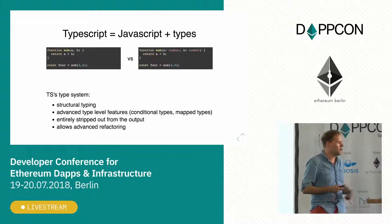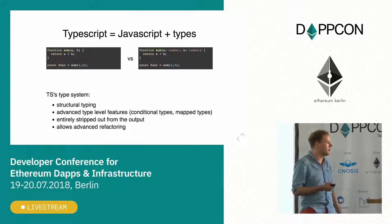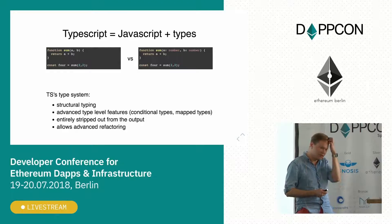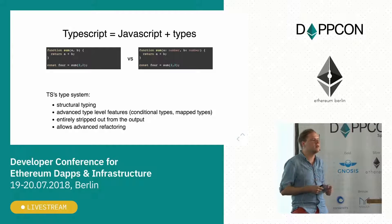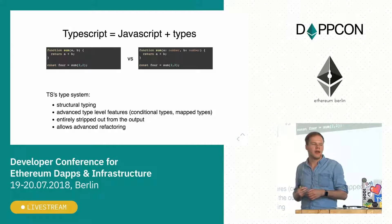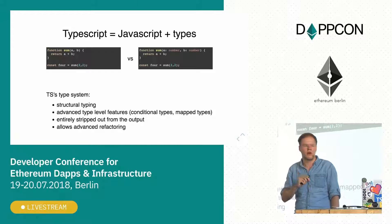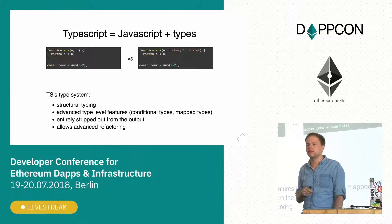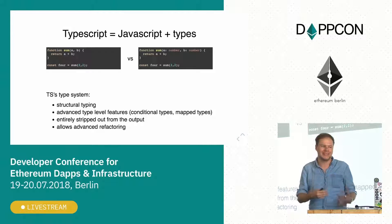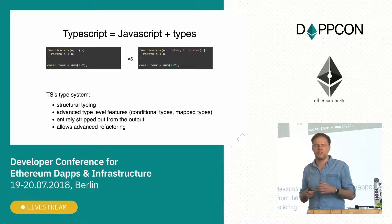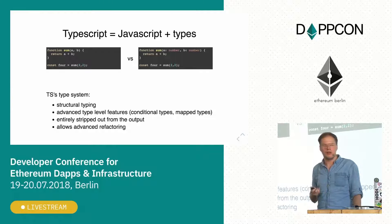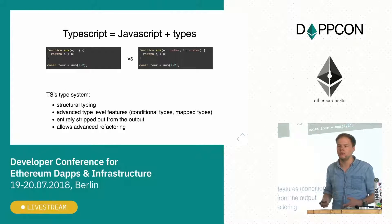TypeScript also has some pretty advanced type-level features like conditional types and mapped types. These allow us to create, for example in a React/Redux application, fully typed action messages in Redux, so when you act on an action in reducers you know exactly what the payload is. The same goes for creating Node.js event emitters with typed on() handlers, where you can make the event string type-safe. Types are entirely stripped from the output, so in the end it's just JavaScript.